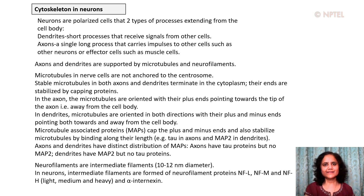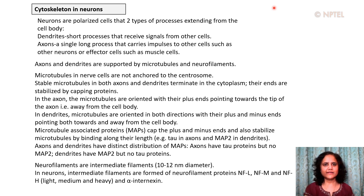The cytoskeleton is particularly important in neurons for shaping them and has a specialized organization. Neurons are polarized cells with two types of processes extending from the cell body: dendrites, which are short processes that receive signals from other cells, and axons, a single long process that carries impulses to other cells such as other neurons or effector cells such as muscle cells. These axons and dendrites are supported by microtubules and neurofilaments.